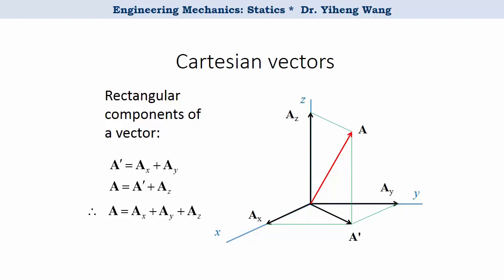We can prove that a equals a_x plus a_y plus a_z, and therefore a_x, a_y, and a_z are the three rectangular components of vector a.